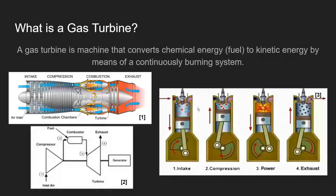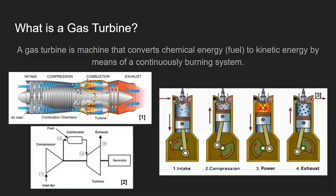A gas turbine is a machine that converts chemical energy — typically some liquid fuel — into kinetic energy by means of a continuously burning system. This continuously burning system is the key differentiating factor between a gas turbine and a more conventional four-stroke engine. The four-stroke engine has one piston and piston chamber responsible for executing all four steps — intake, compression, power, and exhaust — so the piston produces only one power stroke for every four strokes the engine cycles through.